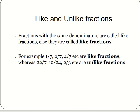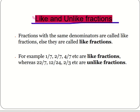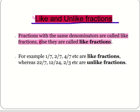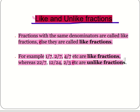Like and unlike fractions. Fractions with the same denominator are called like fractions, else they are called unlike fractions. For example, 1 by 7, 2 by 7, 4 by 7, etc. are like fractions, whereas 22 by 7, 12 by 24, 2 by 3, etc. are unlike fractions.